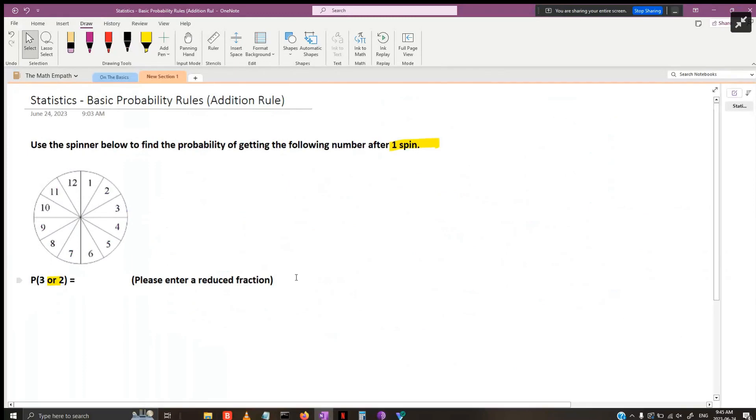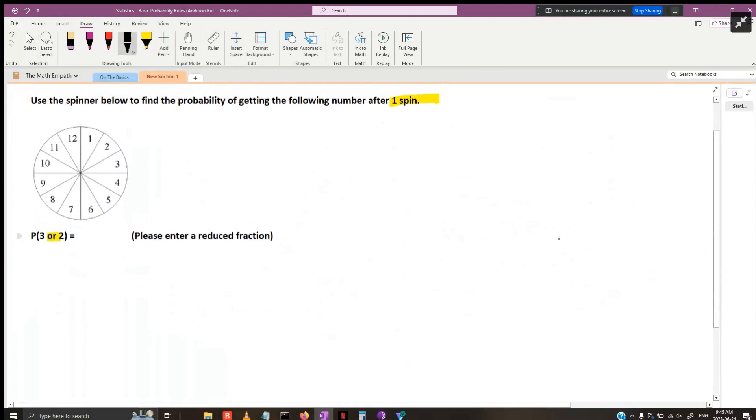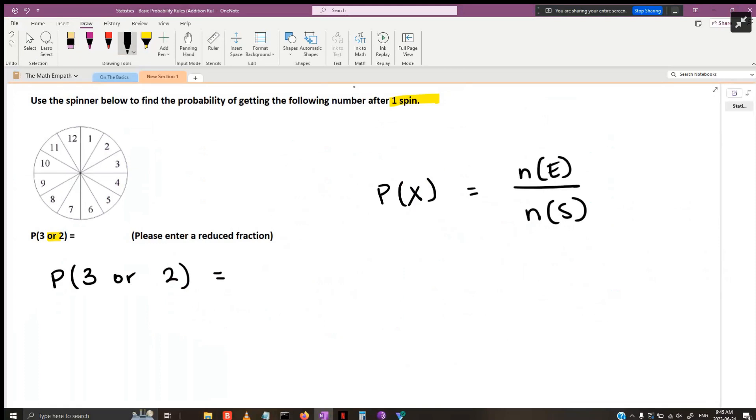We're going to figure out what each event represents as their own probability. This is addition rule, rule one, because three and two don't share any characteristics or items. We're going to use the classical probability setup: the probability of an event equals the number of that event divided by the total sample space, P(E) = n(E)/n(S).